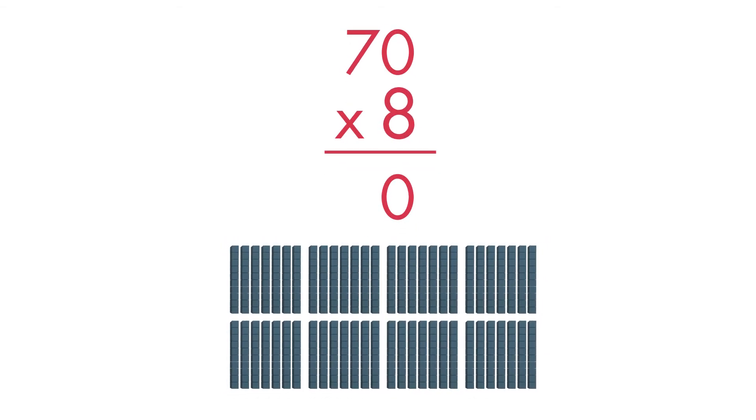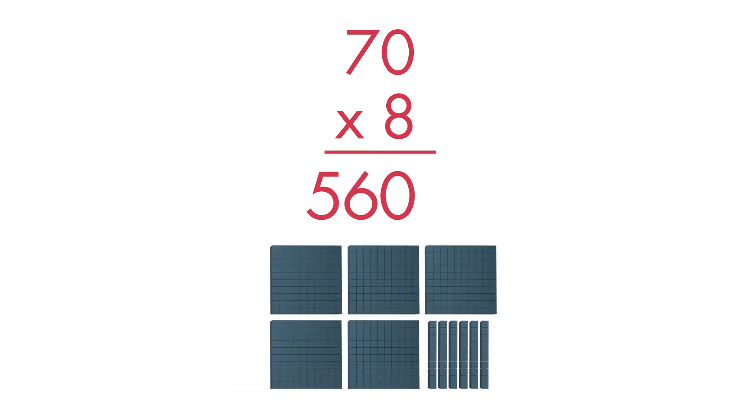Let's solve 70 times 8. First, multiply 0 by 8. 0 times 8 is equal to 0. Next, multiply 7 tens by 8. Use your facts! 7 tens times 8 is equal to 56 tens, or 560.